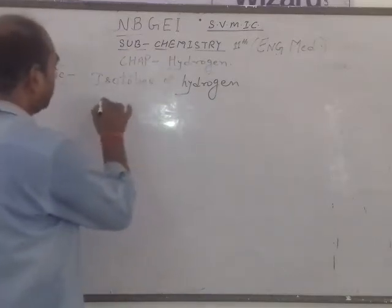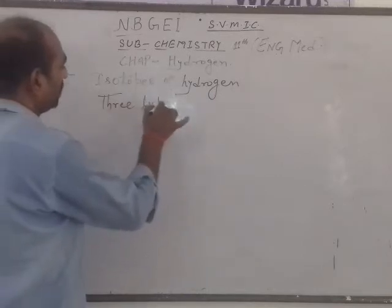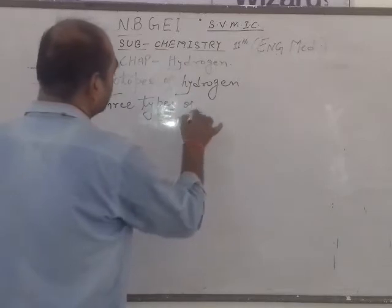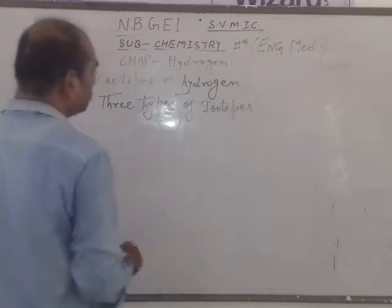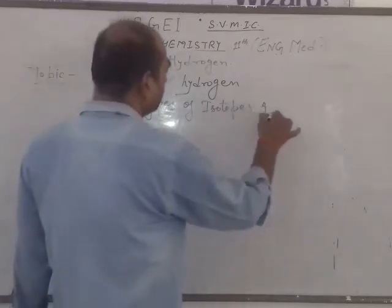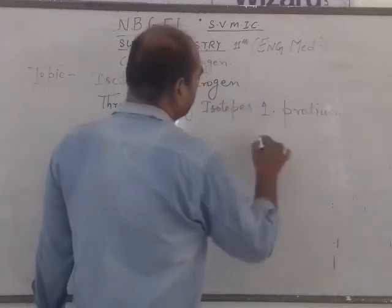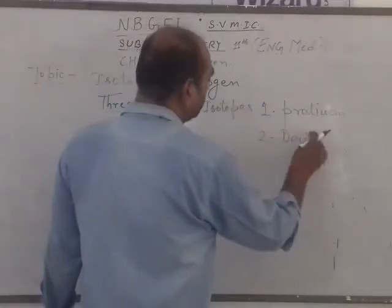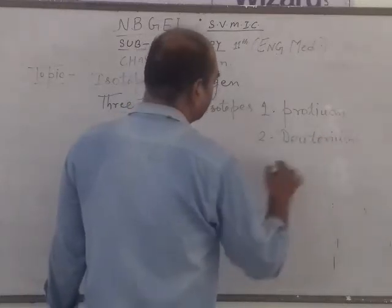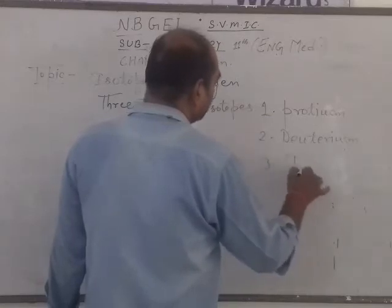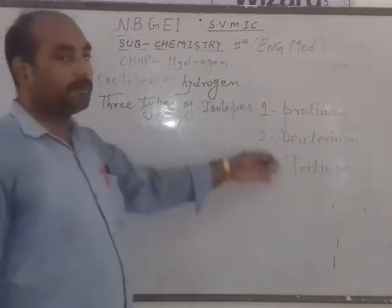There are three types of isotopes of hydrogen. Number one, protium. Number two, deuterium. And number three, tritium. These are the three types of isotopes.